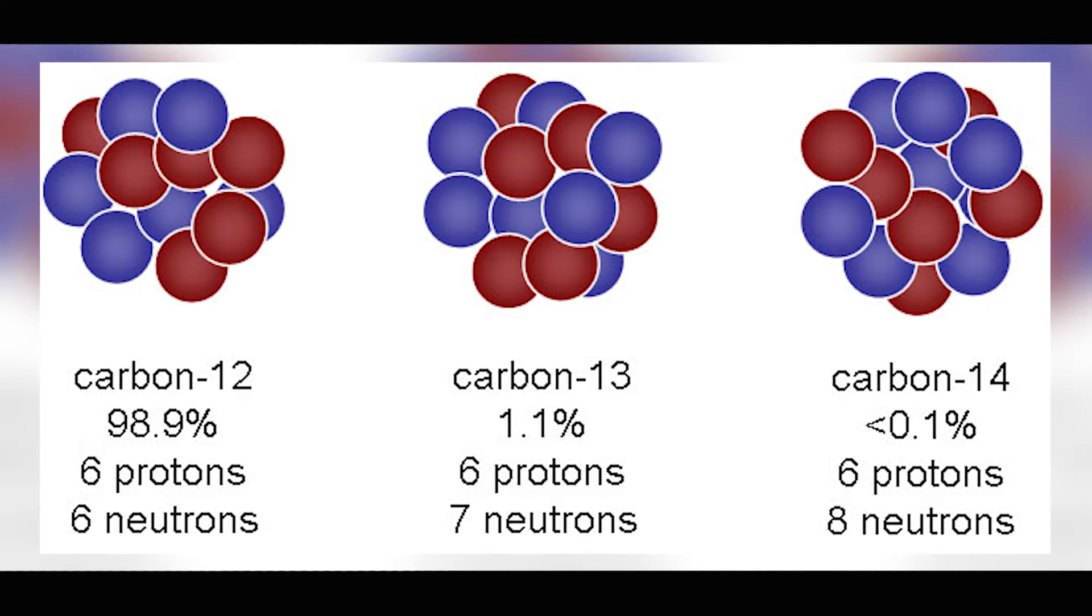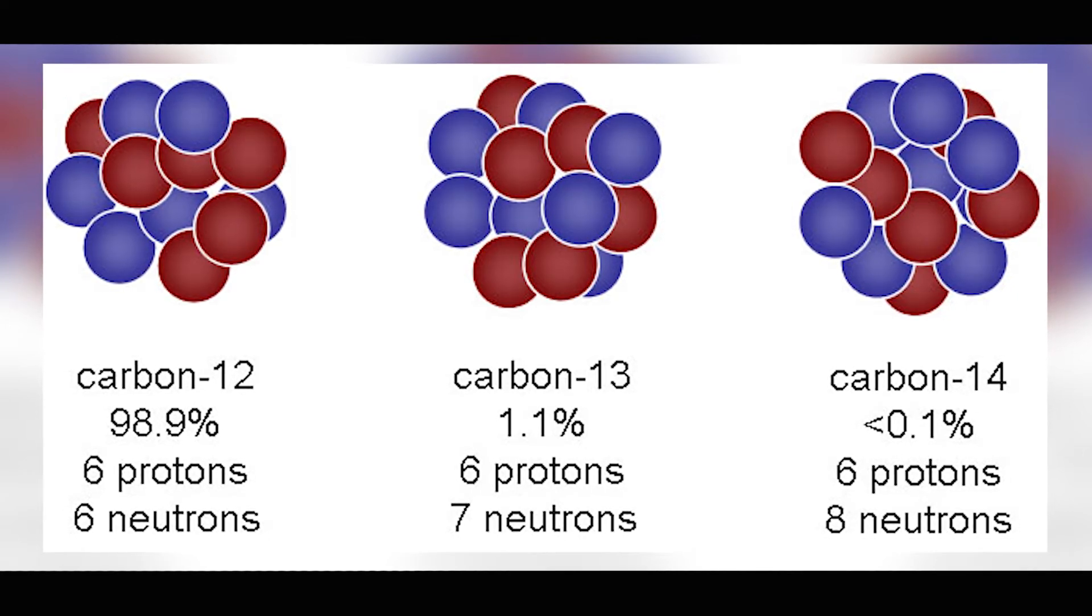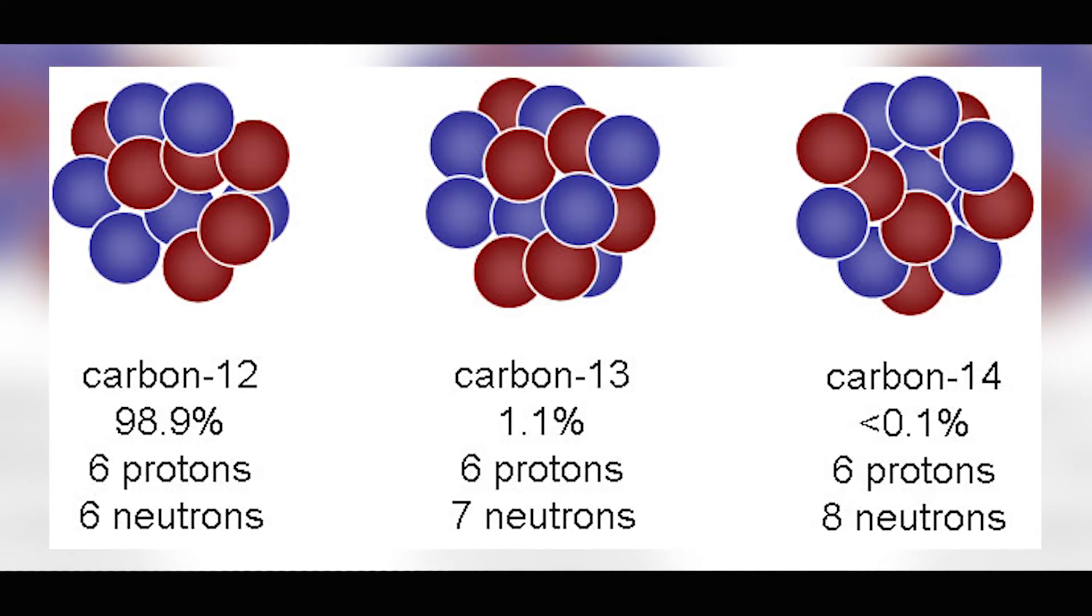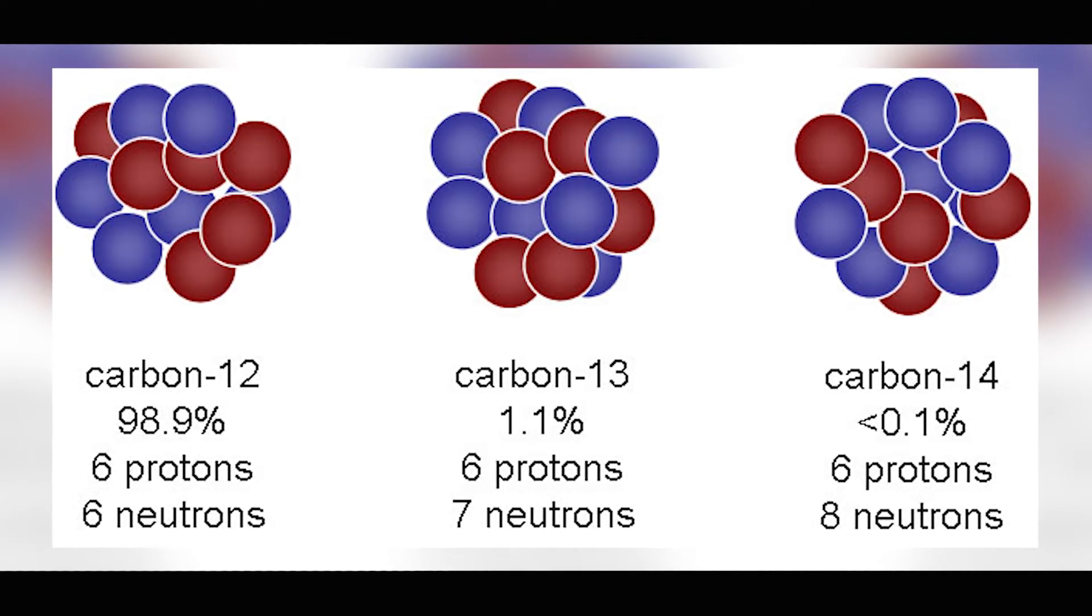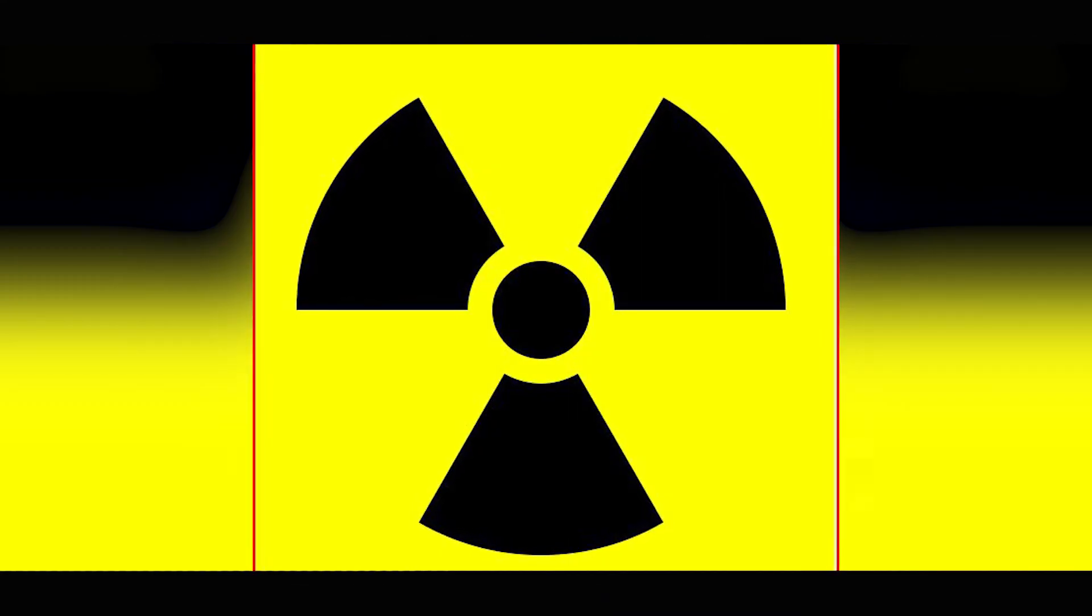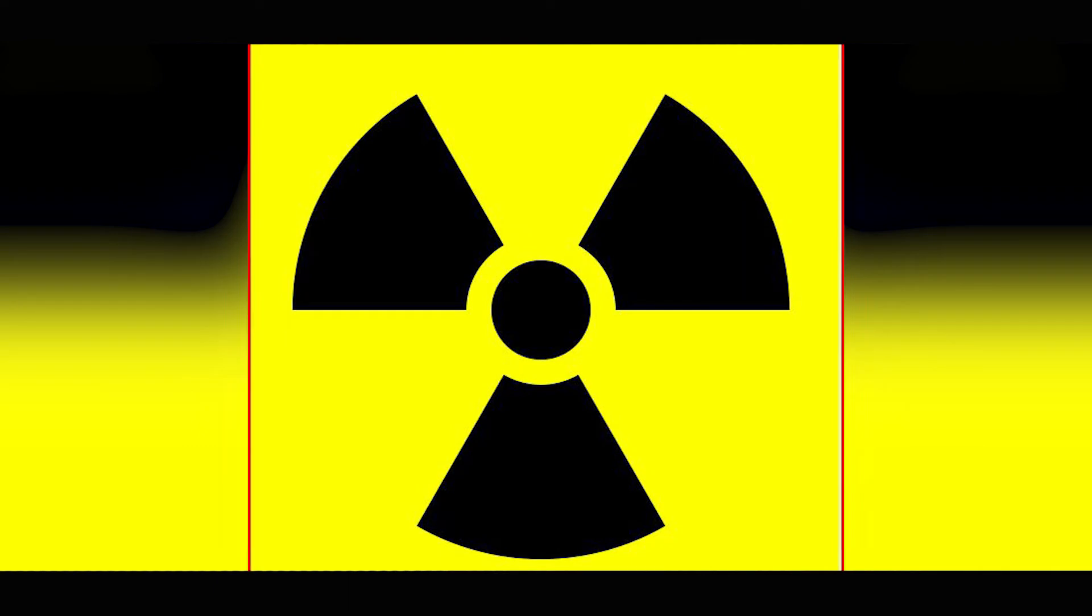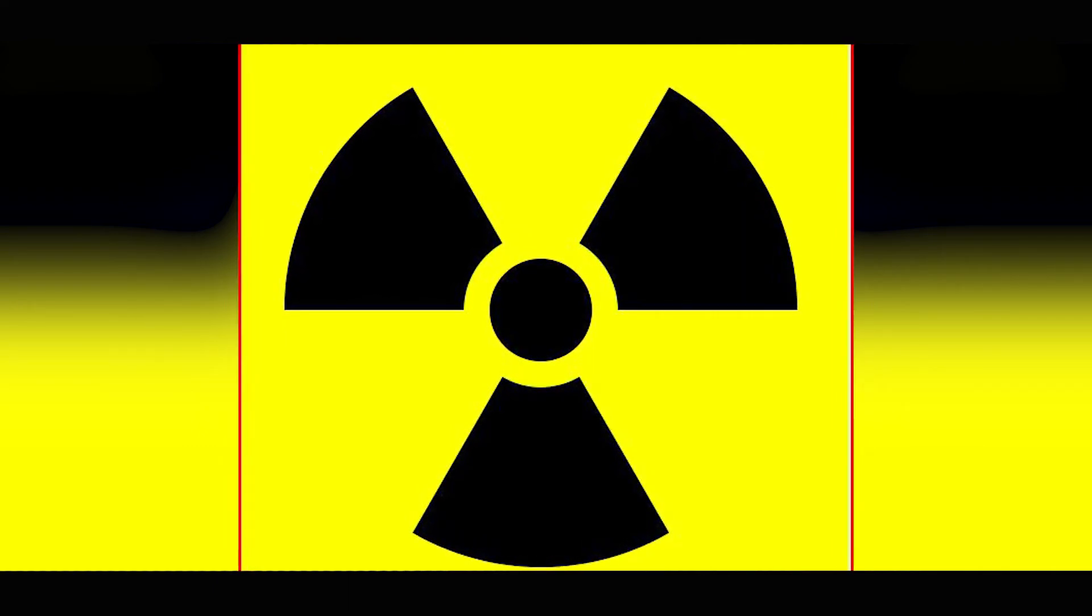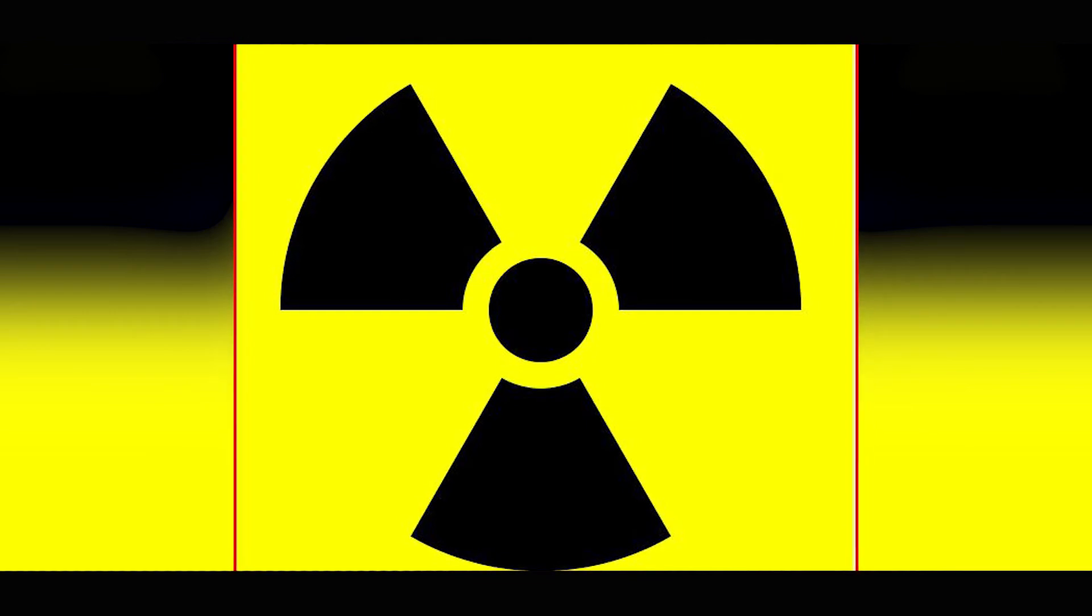Sometimes you'll find it with one extra neutron or one missing neutron, which would make it carbon-11 if it's missing one or carbon-13 if it has an extra neutron. Usually this means that the nuclear forces are going to slowly start breaking down, releasing a form of energy called radiation until they reach the desired stable level.